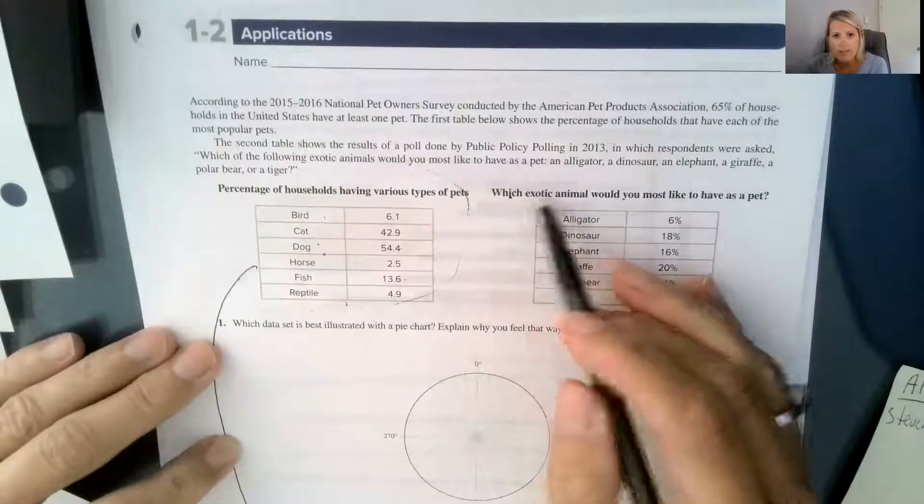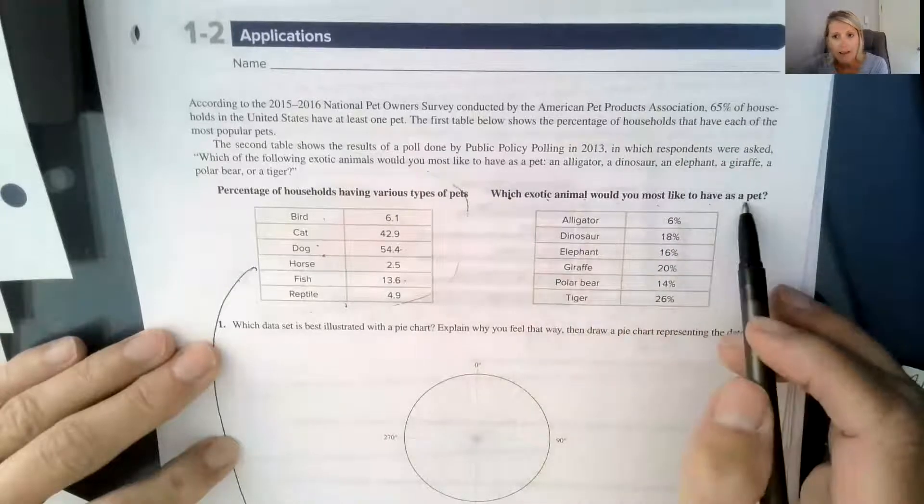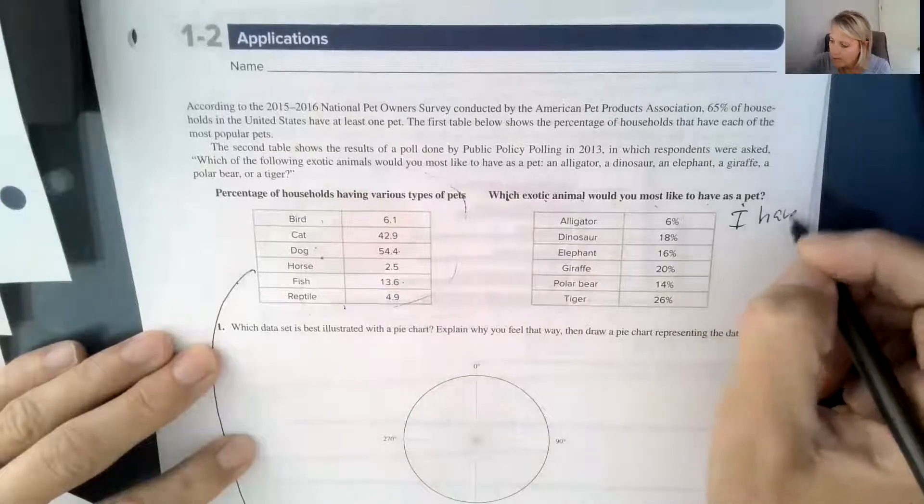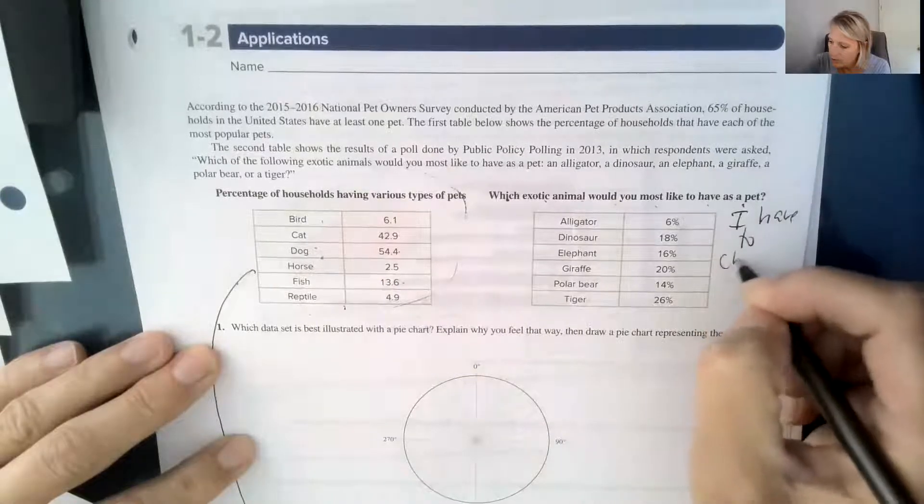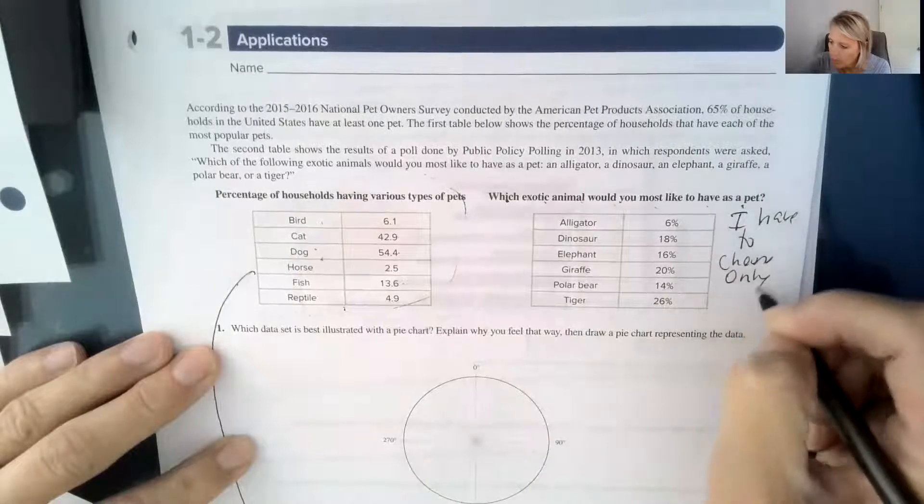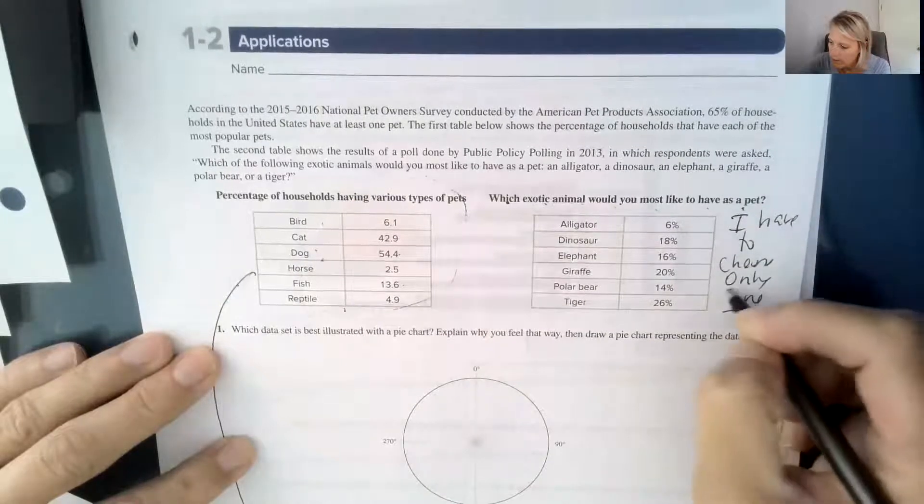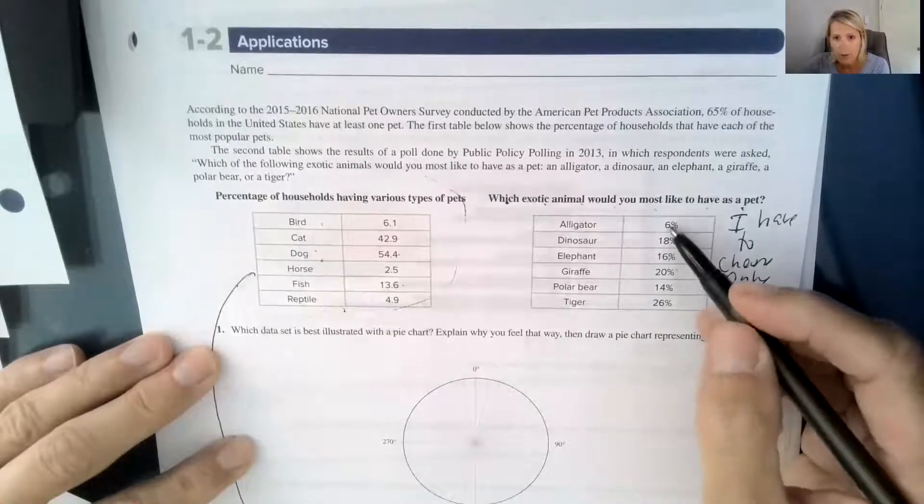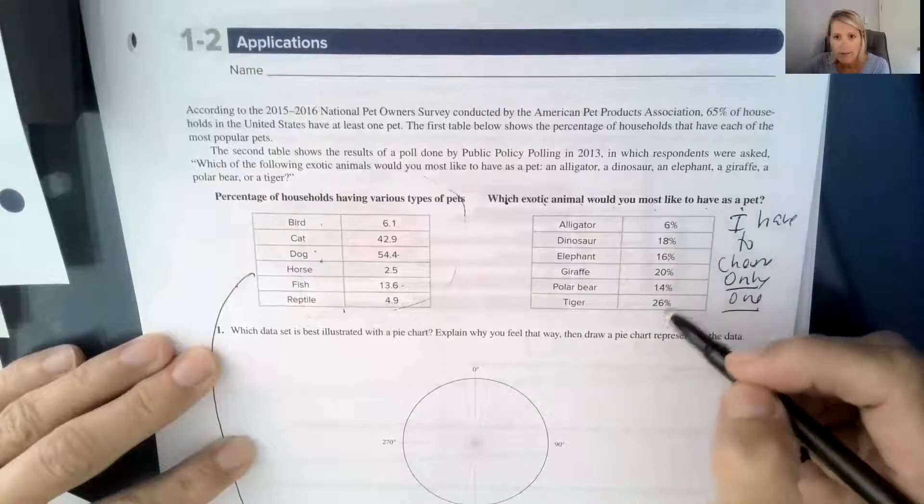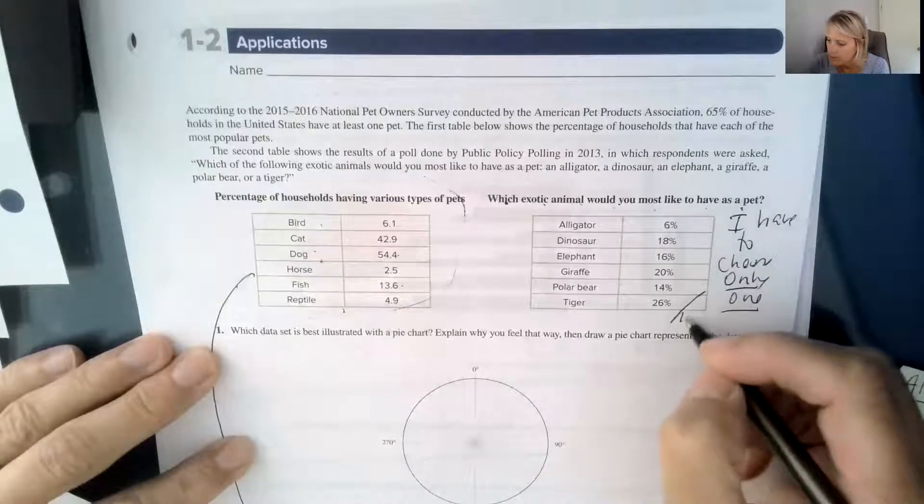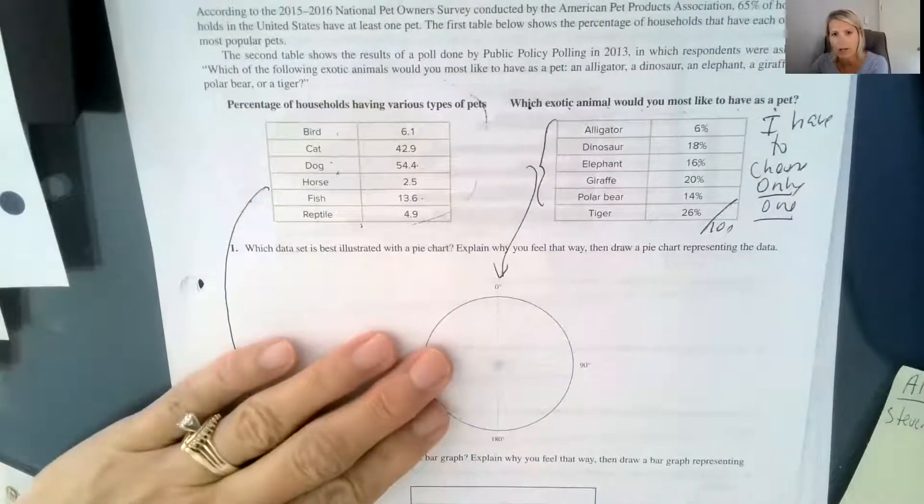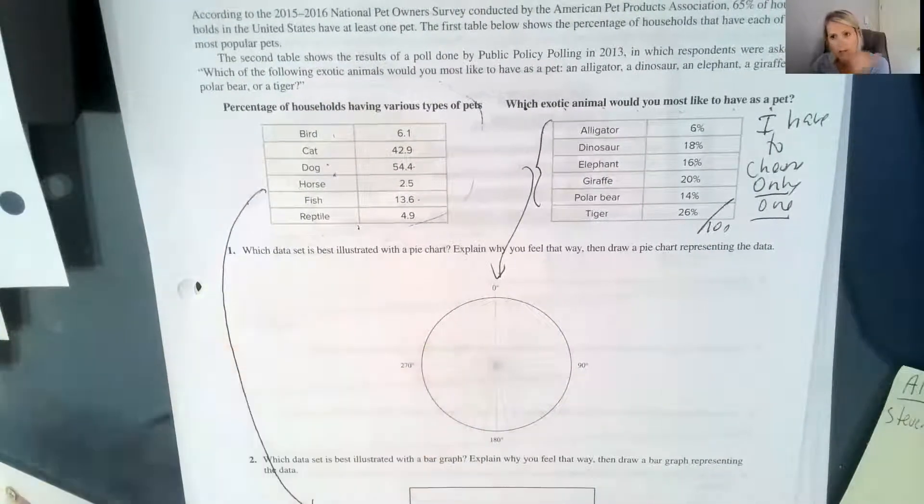And then this question says, which exotic animal would you most like to have as a pet? So this means I have to choose one, to choose only one. So in that case, they should add up to be 100. So 34, 40, 50, 60, 74, and 100%. So that's why we would do this data here in the pie graph. And we would make that pie graph very similar to how we made the one on the prior sheet.